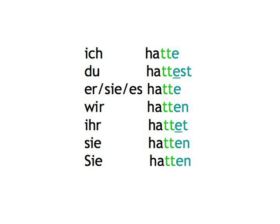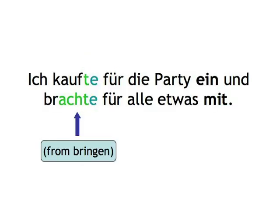As you would expect, separable verbs are separated as in the present tense, with no change in the sentence structure, their prefix being at the end of the sentence. Ich kaufte für die Party ein und brachte für alle etwas mit.